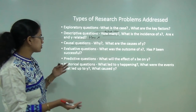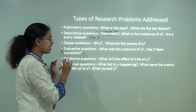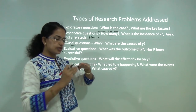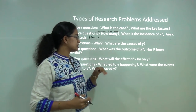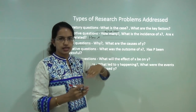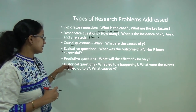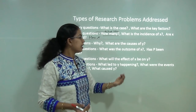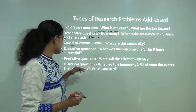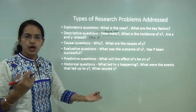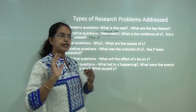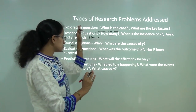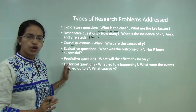Evaluative research addresses questions like: what was the outcome for X, or has X been more successful than Y? Predictive research tries to see the impact of one variable on another — the effect of Y on X. Under historical research, questions include: what led to the happening of Y, what were the events that led up to Y, or what caused Y — all these involve understanding past elements and fall under historical research.